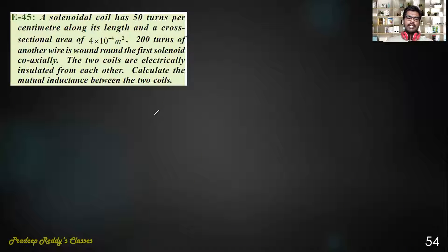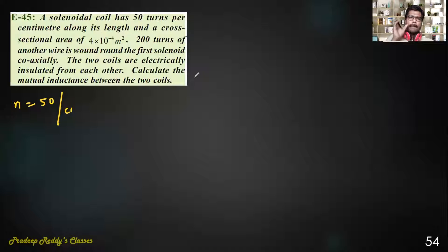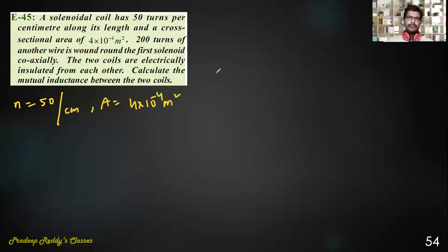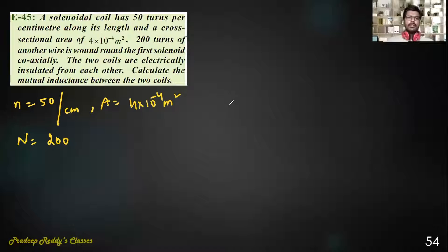A solenoid coil has 50 turns per centimeter along its length and a cross-sectional area of 4×10⁻⁴ meter square. 200 turns of another wire is wound around the first solenoid coaxially. The two coils are electrically insulated from each other. Calculate the mutual inductance between the two coils.